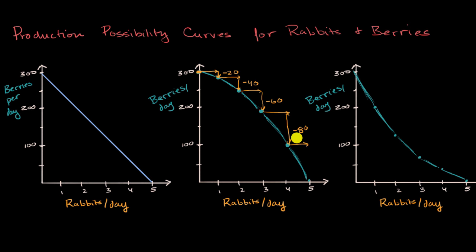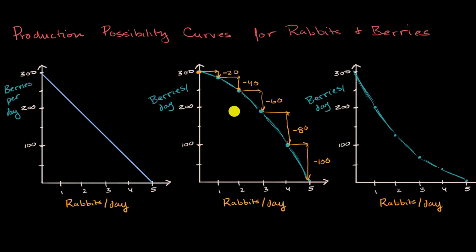Last but not least, that fifth rabbit — the most I can hunt in a day — I'm going to give up 100 berries, because I'm going after the really nimble, sly rabbit, and I'm giving up literally the low-hanging fruit in terms of berries. So the important realization is this bowed-out shape describes an increasing opportunity cost.